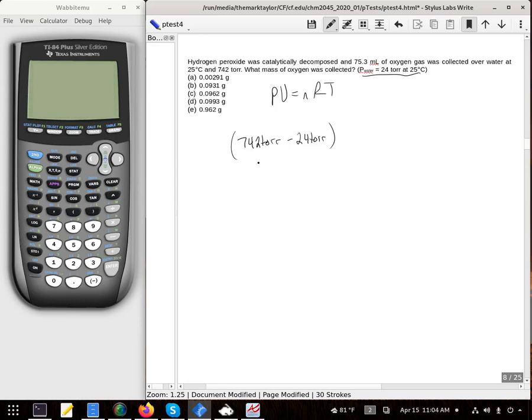And also, since PV equals nRT needs atmospheres, I'll need to convert this into torr. So once I get that difference, I'll do a little conversion.